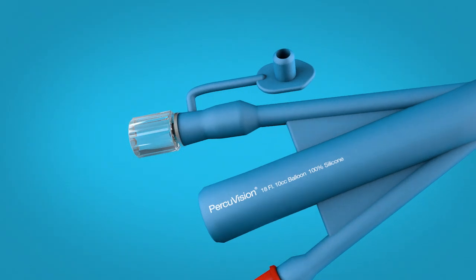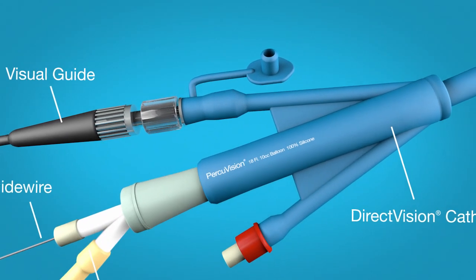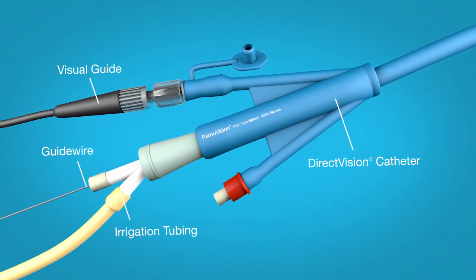The DirectVision catheter three-way tri-lumen Foley design is made of 100% silicone. It provides bladder drainage, balloon inflation, and enables irrigation.